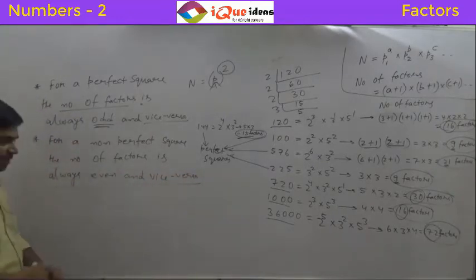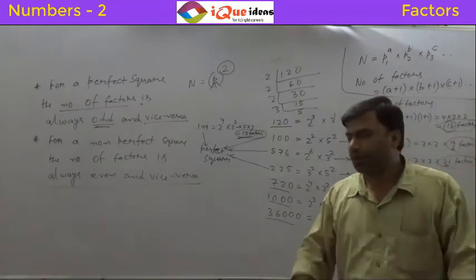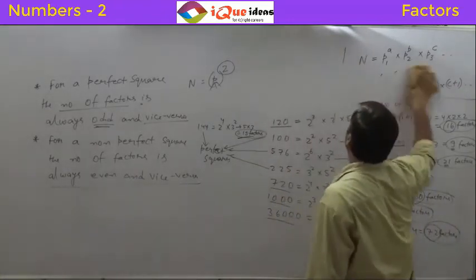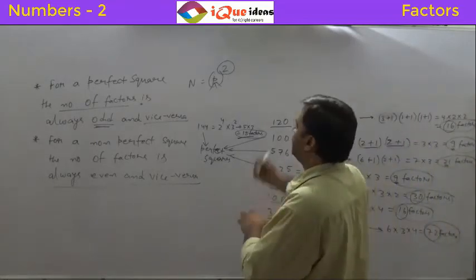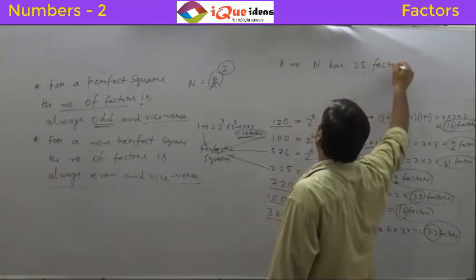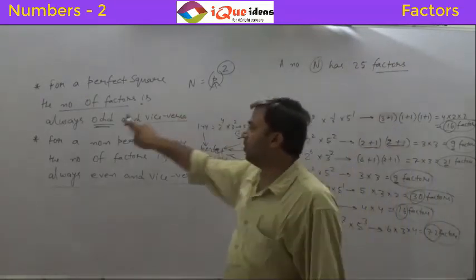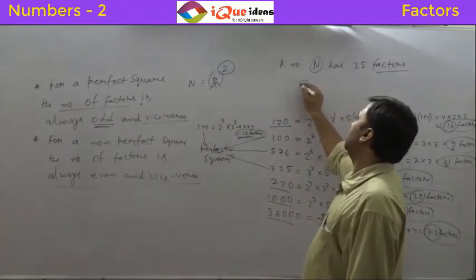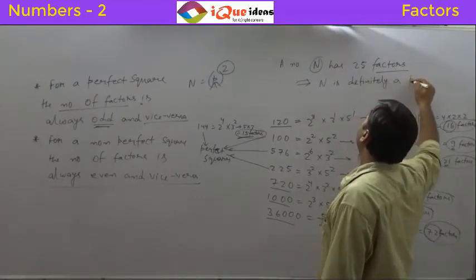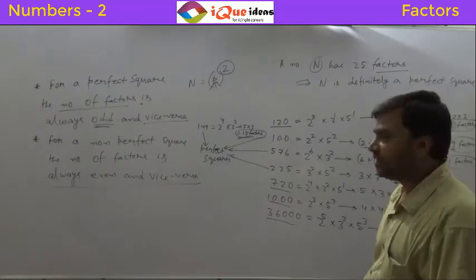Listen very carefully. A number n has 25 factors. Can you tell me anything about that number n? There is at least one thing you can say. The number of factors is 25 — 25 means odd. So it has to be a perfect square. That means n is definitely a perfect square. What perfect square? That we do not know. But at least we can say that it has to be a perfect square.